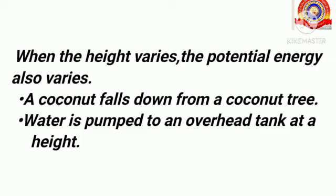When the height varies, the potential energy also varies. Here you can see two situations: a coconut falling down from a coconut tree, and water being pumped to an overhead tank at a height. These two are examples of potential energy due to position, and by analyzing these two situations we can say that both possess different heights, with potential energy varying according to the height.